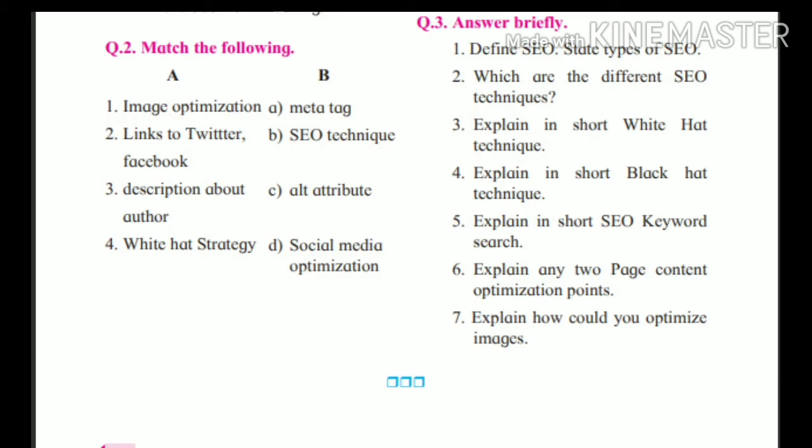Answer briefly. First question: define SEO and state types of SEO. SEO stands for search engine optimization. Search engine optimization is a technique used for designing and developing a website to be ranked high in search engine results; it is a subset of search engine marketing. There are two types of SEO: on-page SEO and off-page SEO.